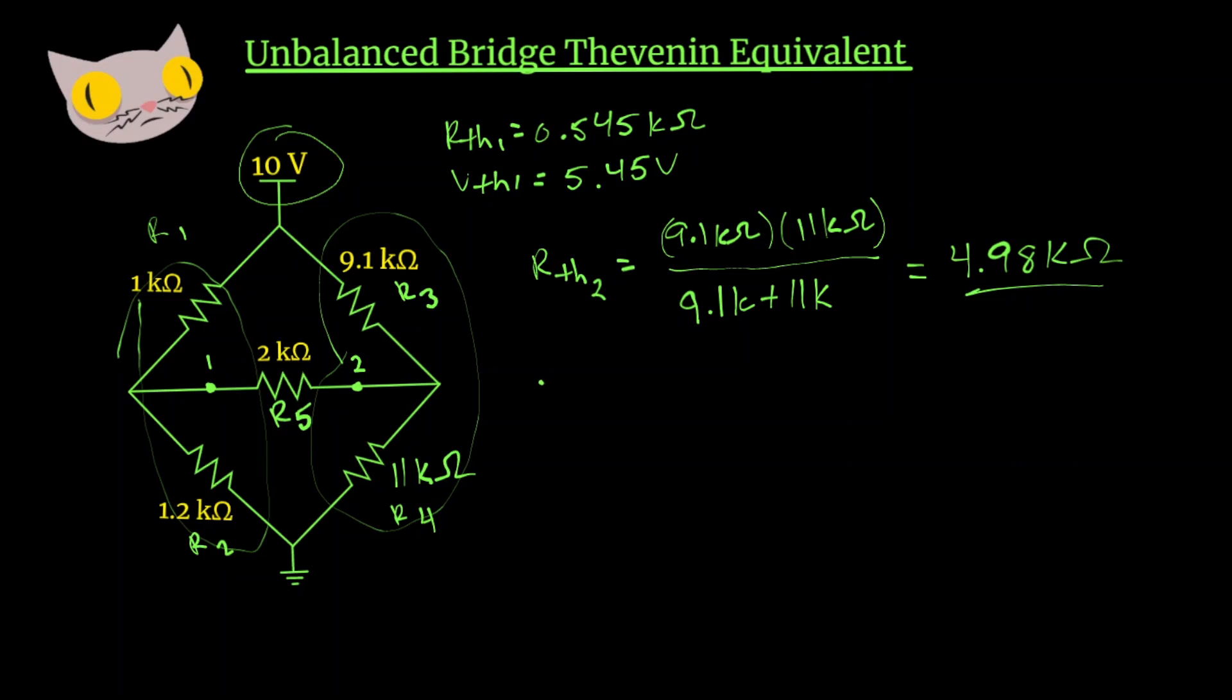And the Thevenin voltage is going to be 10 volts times R4 over R3 plus R4. So we get 10 volts times 11k ohms over 9.1k plus 11k. And that's going to give us 5.47 volts.